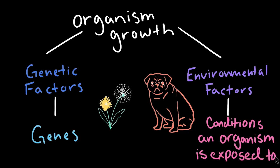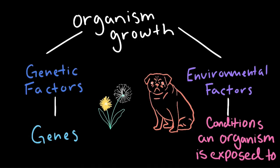These factors show that all living organisms have a couple things in common, even dogs and dandelions. So while our interactions with them may differ — like how you can't teach a dandelion to sit like you can with a dog — both organisms experience growth and development through their own unique genes and environments.